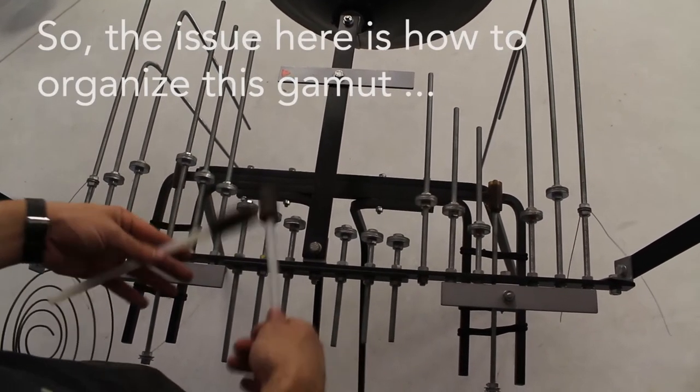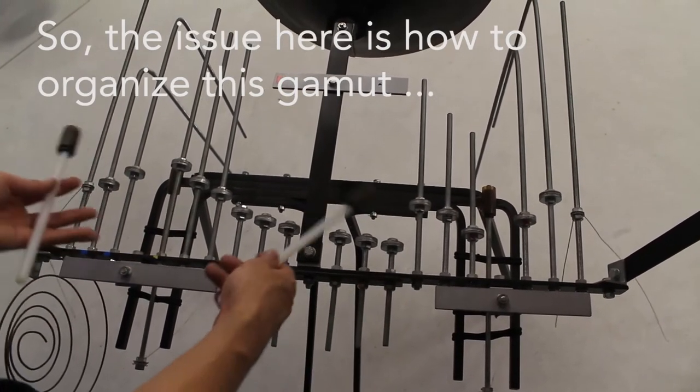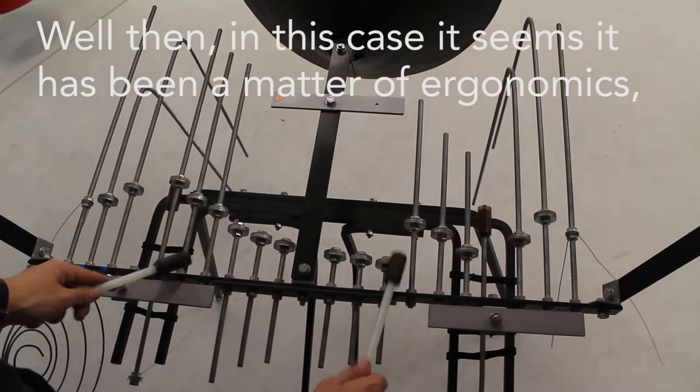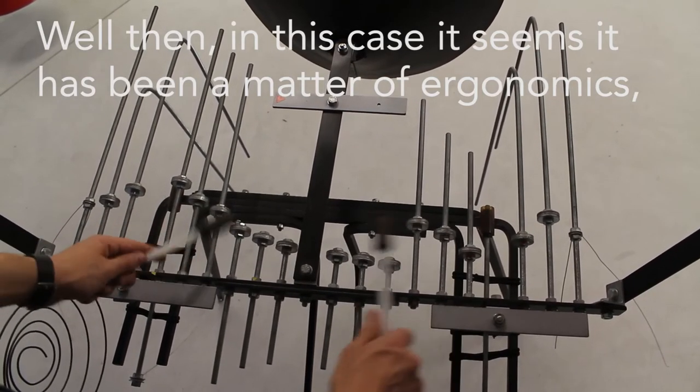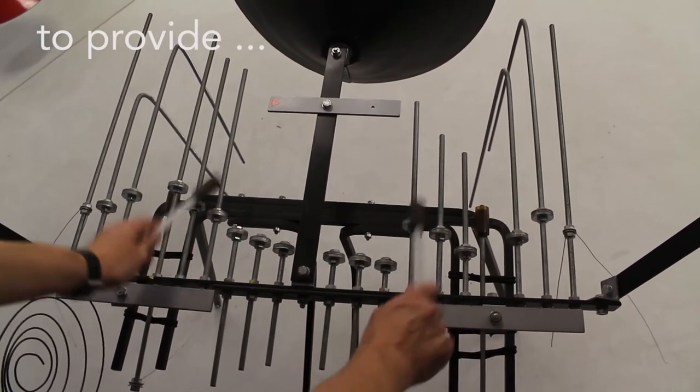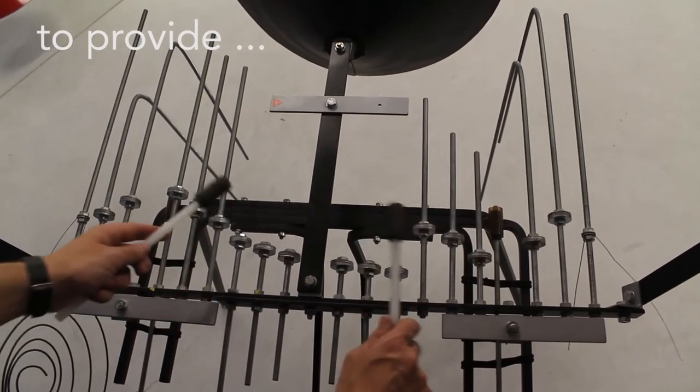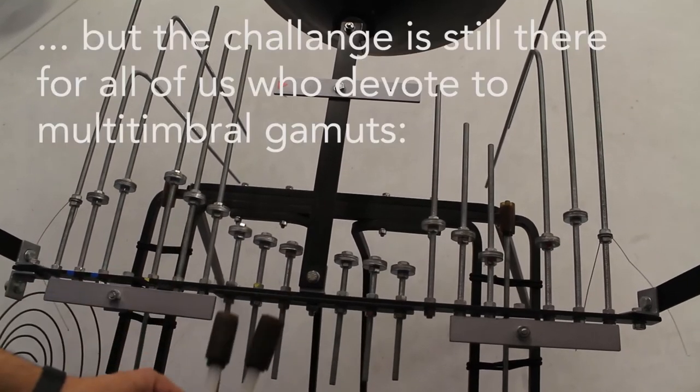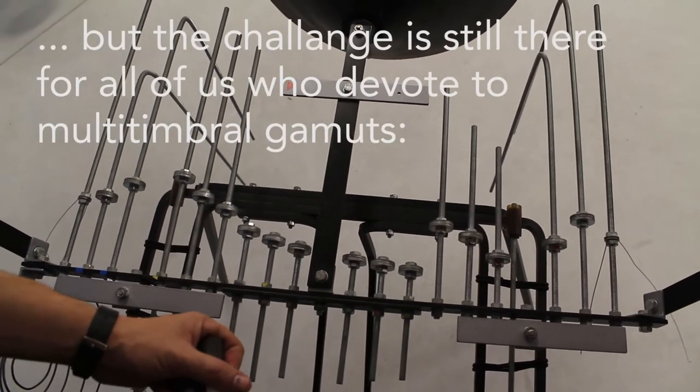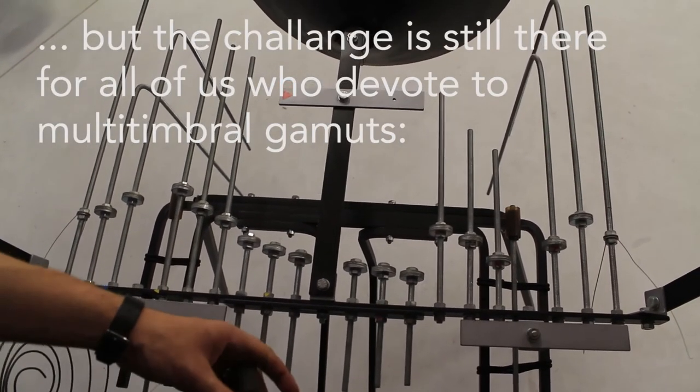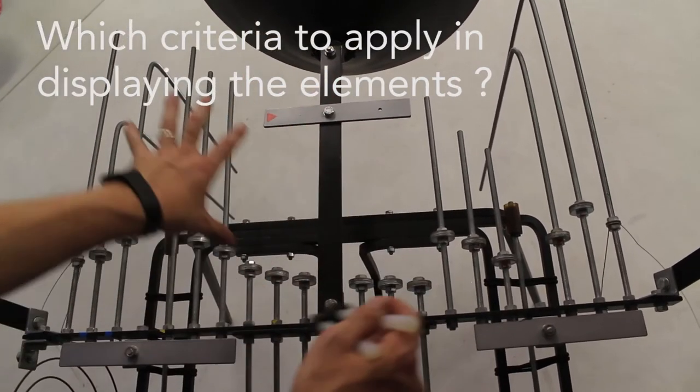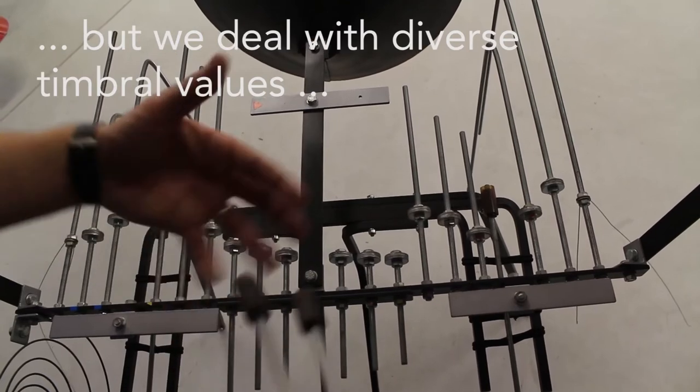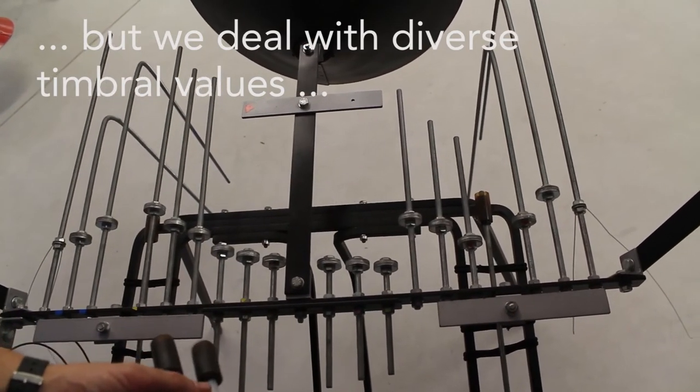Pues bien, la cuestión es cómo ordenar esta gama. Bueno, en este caso parece ser una cuestión más de ergonomía, de tener una posible simetría en el movimiento, pero el reto sigue estando allí para todos los que trabajemos con gamas multitímbricas. ¿Con qué criterio disponer los elementos, dado que no solo es de grave agudo, sino que encontramos tímbricas muy distintas unas de otras?